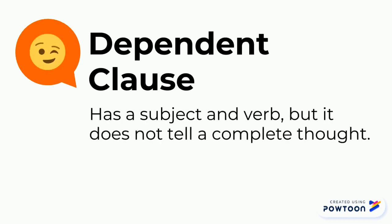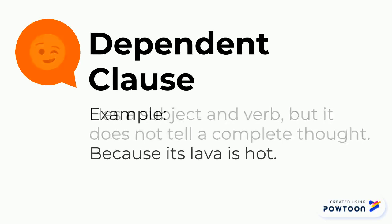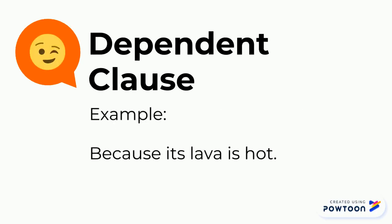A dependent clause has a subject and a verb, but it does not tell a complete thought. For example, because its lava is hot. As you can observe, this sentence doesn't have a complete thought. We cannot understand what you're talking about.